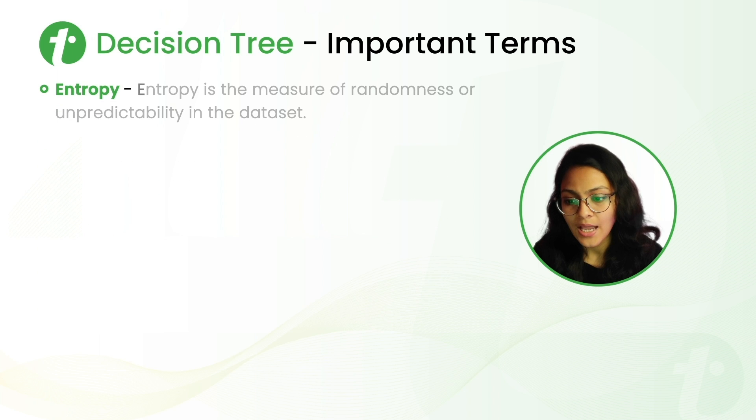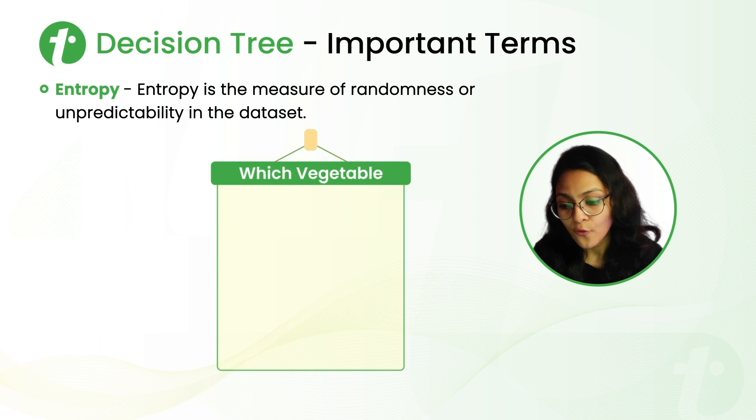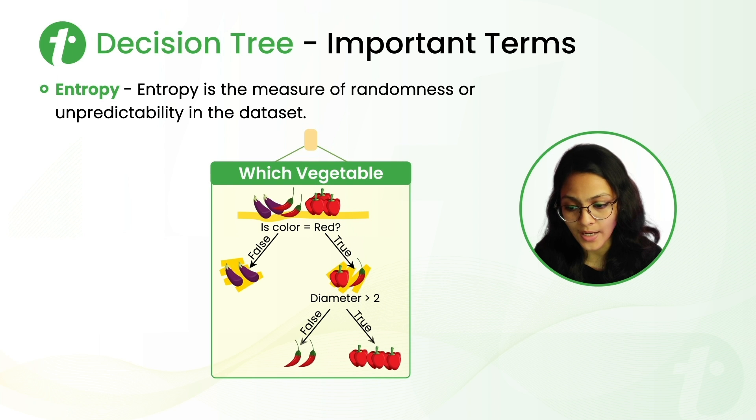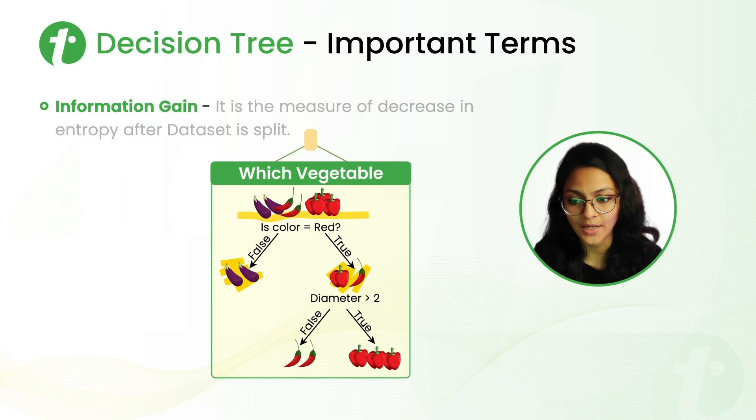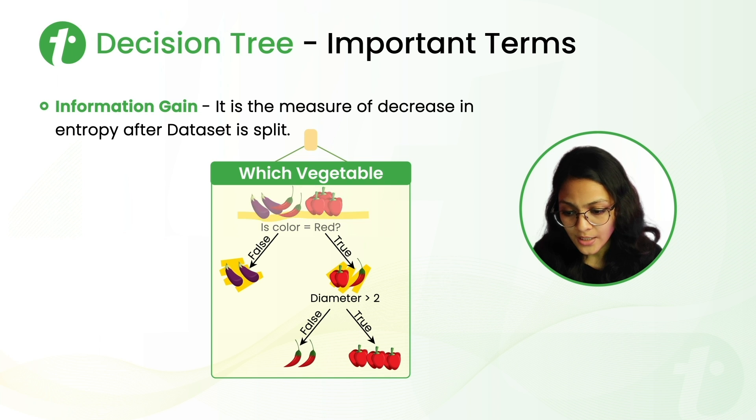Next is entropy. Entropy is the measure of randomness or unpredictability in the dataset. From the diagram, we can observe that at the first stage there is high randomness. That means its entropy is high. Next is information gain. And it is the measure of decrease in entropy after the dataset is split. Again, from the same diagram, we can observe that after the split, the randomness of the dataset decreases. That means its entropy decreased. And the information gain after the split is higher.